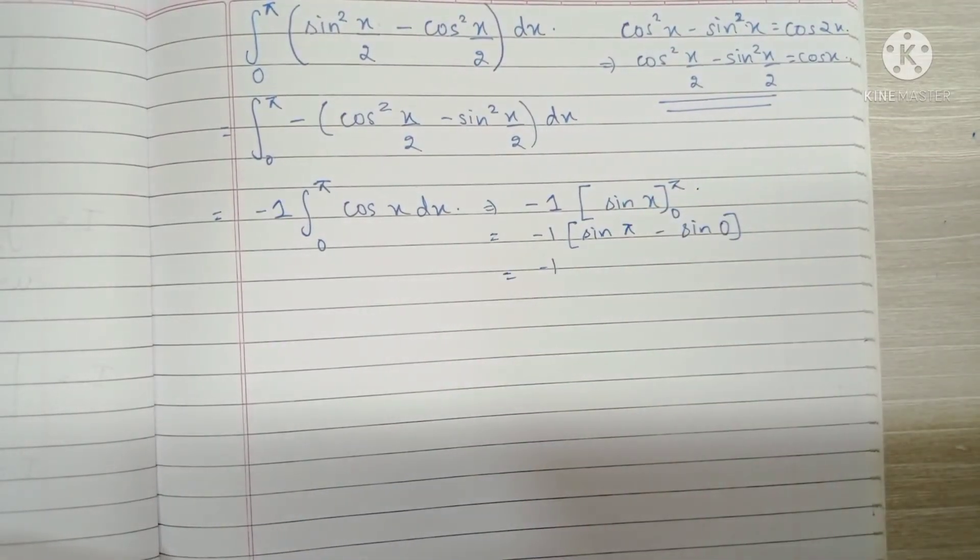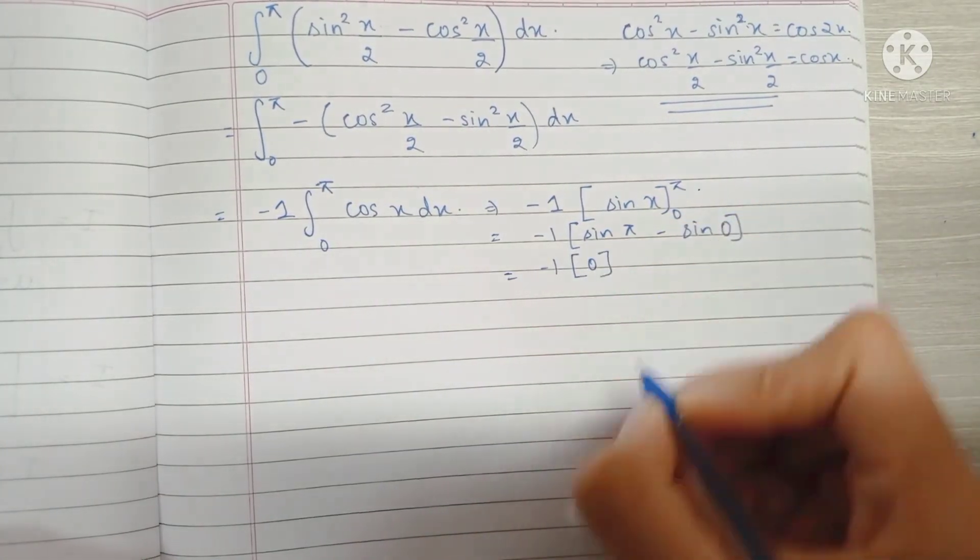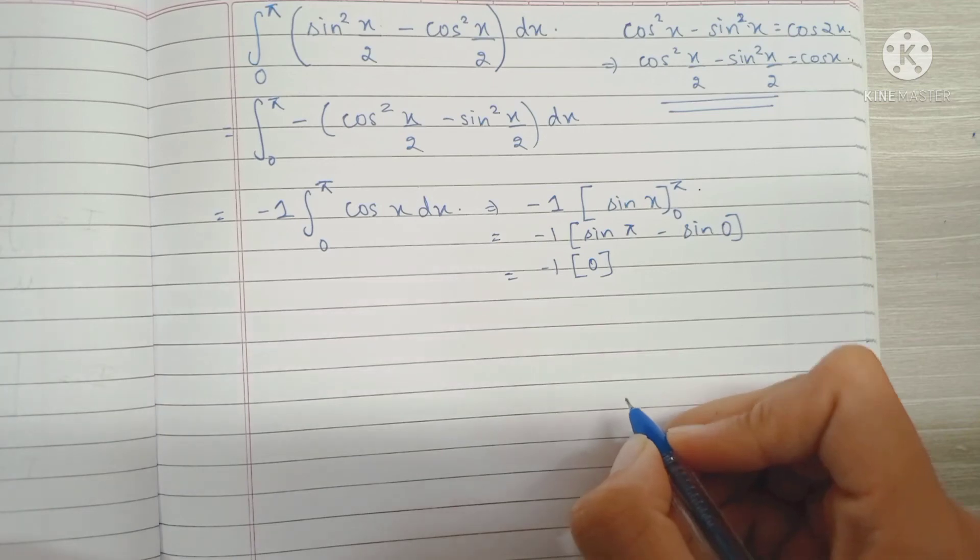We know that sine pi is 0 and sine 0 is also 0. So inside this bracket we have 0, and minus 1 into 0 is 0.